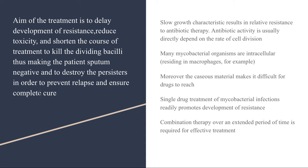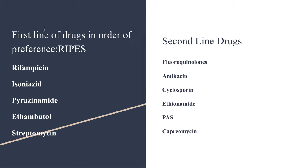The first-line drugs, used in preference, are Rifampicin, Isoniazid, Pyrazinamide, Ethambutol, and Streptomycin, remembered with the mnemonic RIPES. The second-line drugs include fluoroquinolones, amikacin, cycloserine, ethionamide, para-aminosalicylic acid, and capreomycin, remembered with the mnemonic FACE BACK. So first-line is RIPES and second-line is FACE BACK.